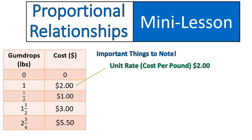The first thing to note is that the unit rate is the cost per pound. In this table, you're given that value. One pound costs $2, right? If you are not given that, you can find it by taking any cost divided by the number of pounds. So, for example, $5.50 divided by 3 and 3 quarters gives you 2. $3 divided by 1 and a half gives you 2. $1 divided by 1 half gives you 2. Any cost divided by pounds will give you a consistent unit rate.